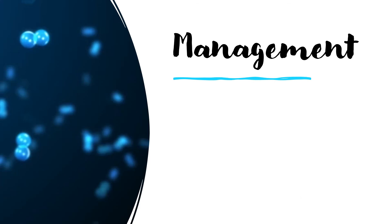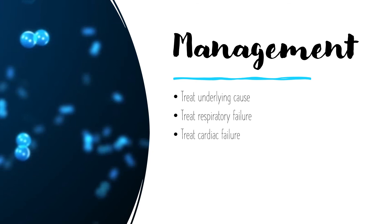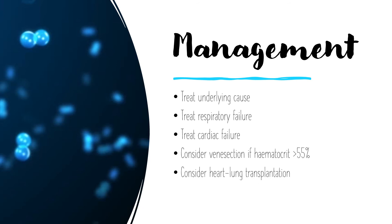In order to treat Cor Pulmonale, you need to address the underlying cause. Make sure to treat any respiratory failure with oxygen. Treat cardiac failure with diuretics like furosemide. Some patients may have raised haematocrit levels — the ratio of the volume of red blood cells to the total volume of blood — and if this is the case, consider venesection. Consider a heart-lung transplant in young patients and of course long-term oxygen therapy.